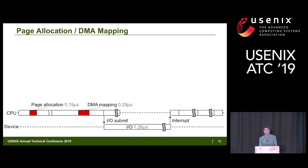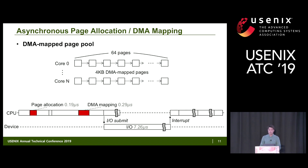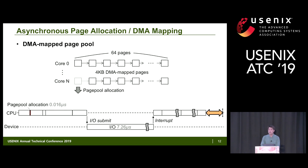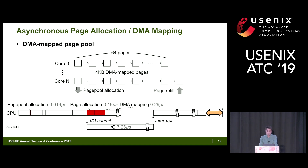Our first focus is page allocation and DMA address allocation. To remove these from the critical path, we maintain a pool of free pages with DMA addresses pre-assigned. The pool is a simple per-core linked list of 4KB free pages, so we insert only a fast pool allocation into the critical path. After I/O submission, we asynchronously refill the page pool, running that work in parallel with the I/O.